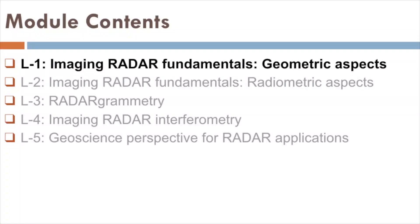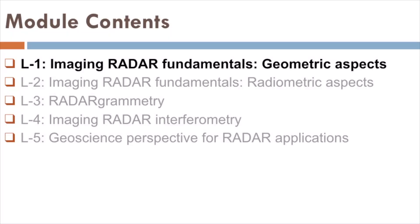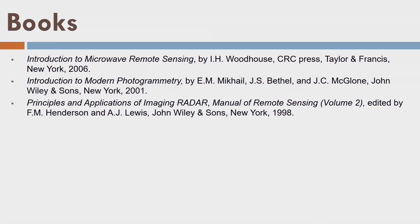We have a series of 5 lectures in this module. The first lecture is about the geometric aspects of RADAR fundamentals. The reference books are: Introduction to Microwave Remote Sensing, Introduction to Modern Photogrammetry by Mikhail, and Principles and Applications of Imaging RADAR. These books are very expensive — one should visit a library or institute library to refer to them. This lecture series is sufficient for fundamental knowledge; however, someone interested in deeper knowledge should definitely go to the library.